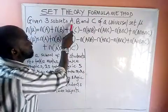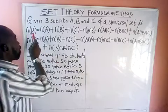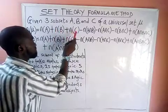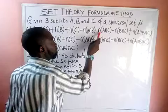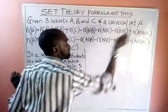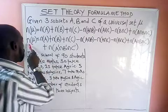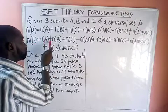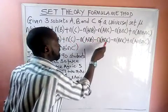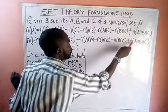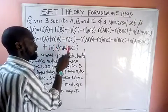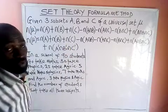So here we are given three subsets, and the formula says: number of the universal set equals number of A plus number of B plus number of C, minus number of A∩B, minus number of A∩C, minus number of B∩C, plus number of A∩B∩C. The second formula is the same but also adds the number of A'∩B'∩C'. So we can have two formulas under the formula method in set theory.